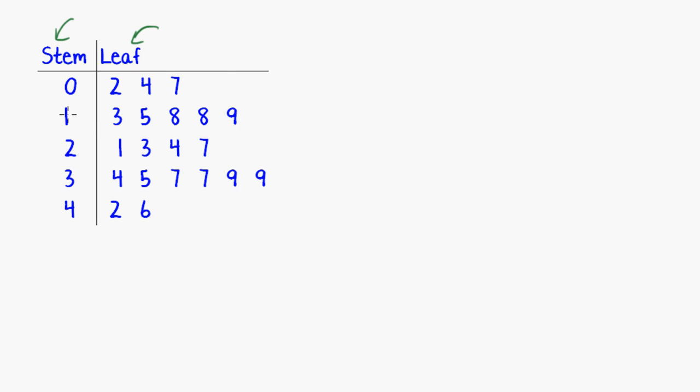And what I mean by that is, for example, one bar three represents the number 13. So our stem numbers are the number in the tens column and our leaf numbers are the number in the ones column, if you will.